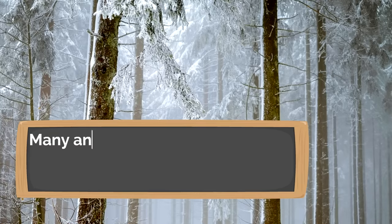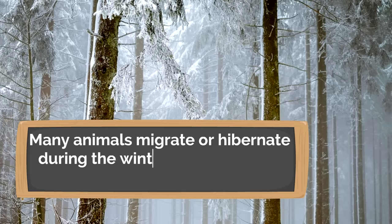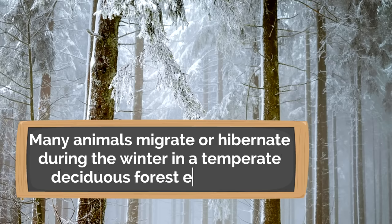Many animals migrate or hibernate during the winter in a temperate deciduous forest ecosystem — they must protect themselves from the cold. While the plants and animals in a tropical rainforest interact with non-living things the same way throughout the year, in the temperate deciduous forest ecosystem there are vast differences depending on the season.